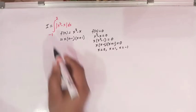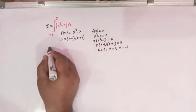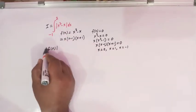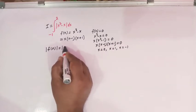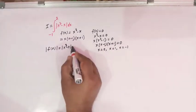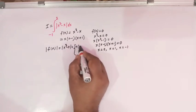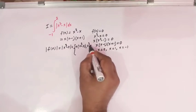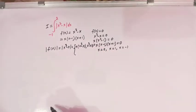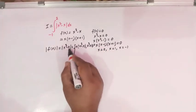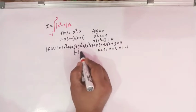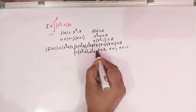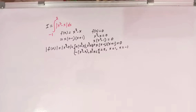As per the definition of the absolute value function, mod of x cubed minus x is equal to positive x cubed minus x whenever x cubed minus x is greater than or equal to 0, and mod of x cubed minus x is equal to negative of x cubed minus x whenever x cubed minus x is less than 0.